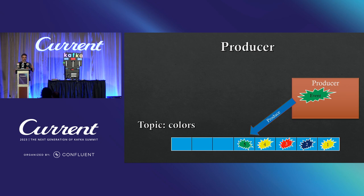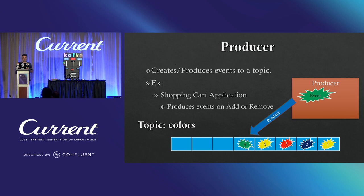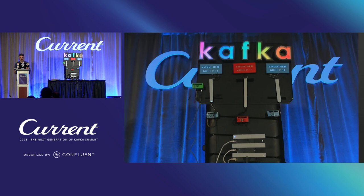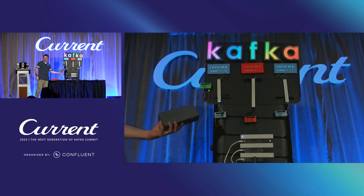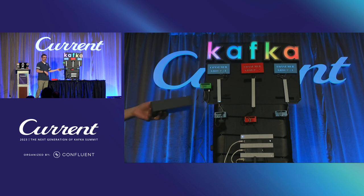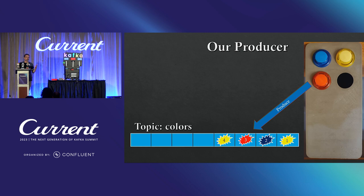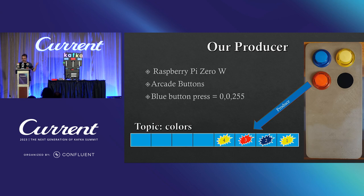We need producers to produce events. A producer creates and produces events to a topic. For example, a shopping cart application might produce an event every time someone adds an item — they're added to the topic in order. Our producers are these little boxes. They actually have Raspberry Pi Zeros in them — mini computers with a little battery to operate. It's a full-fledged Linux operating system running Python code that uses the Confluent Python library to produce messages. When you press a button — for example, the blue button — it'll send a message of 0, 0, 255.